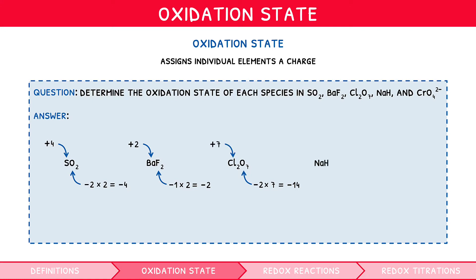In the fourth, sodium is usually its group number, +1, so hydrogen is −1. In the fifth, oxygen is usually −2; since there are 4, this totals to −8, and so one might think chromium must be +8. However, there is a 2− charge, so chromium must only contribute 6, meaning it is +6.